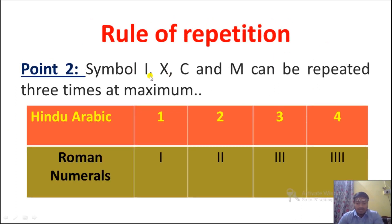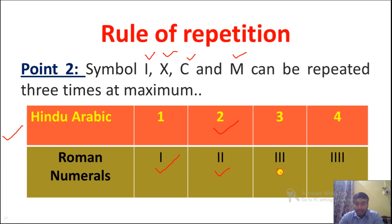Point number 2: the symbols I, X, C, and M can be repeated a maximum of 3 times — not more than that. For example, for 1 we write one I, for 2 we write two I's, for 3 we write three I's, but for 4 we cannot write four I's. Writing I four times is wrong.